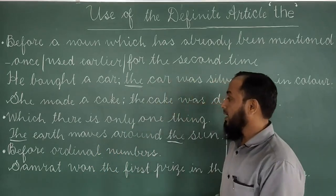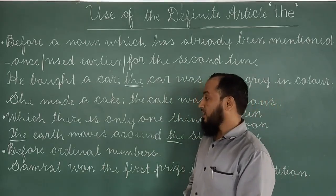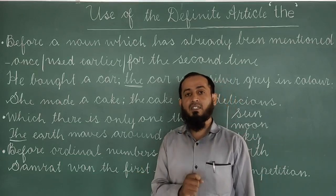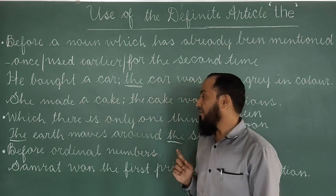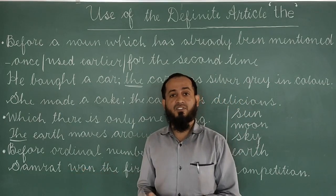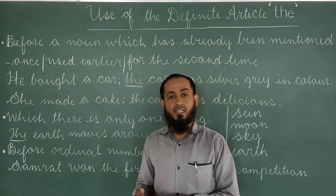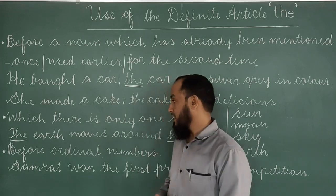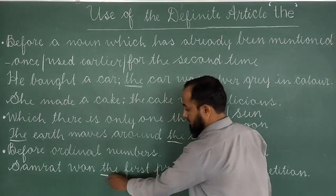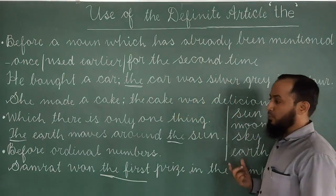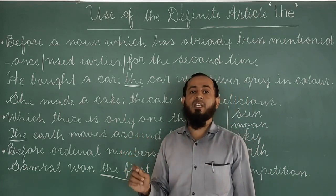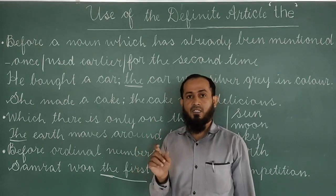Next usage: 'the' is used before ordinal numbers — first, second, third, and so on. Instead of saying simply 'first', we add 'the': the first, the second, the third. For example: 'Samrath won the first prize in the competition.' Another example: 'Dr. Sarvepalli Radhakrishnan was the second President of India.'